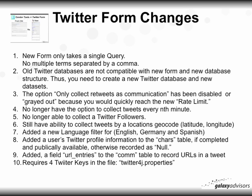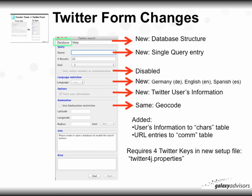Eighth, we've added new user Twitter profile information to the charge table — if a user has completed it and it's publicly available, you'll get all that Twitter profile information saved; otherwise you'll just see it recorded as 'no' in the database. Ninth, we've added a field called URL entries to the comm table to record URLs in a tweet, making it easy to pick up URLs. Tenth, the new form requires four Twitter keys in a file called Twitter4j.properties.